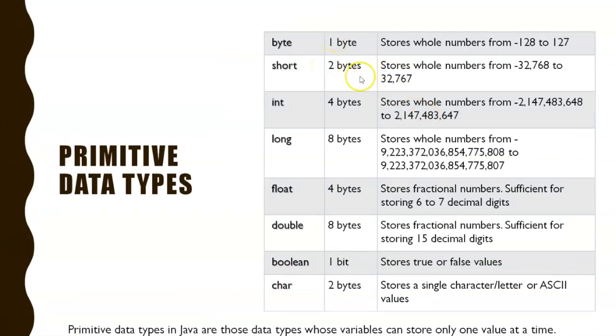Data types define what type of data you are going to store in a program. Based on that, you decide your data type. We will see all these different data type examples soon.